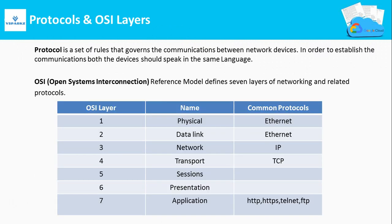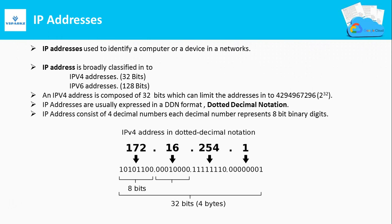Let us see what is a protocol and the OSI layer. A protocol is a set of rules governing communication — in other words, it is the language that network devices use to speak to each other. The OSI — Open System Interconnection — defines seven layers of networking: physical, data link, network, transport, session, presentation, and application. OSI is a reference model only; we should know the TCP/IP protocol at layers three and four in detail.